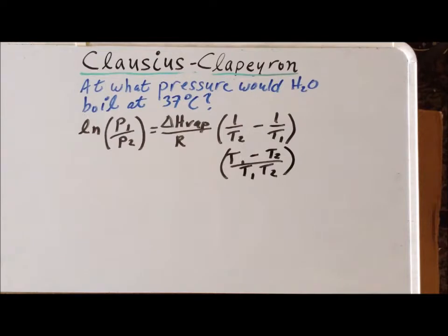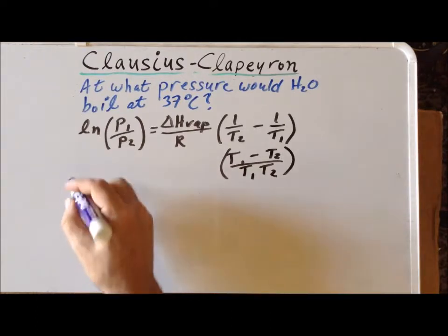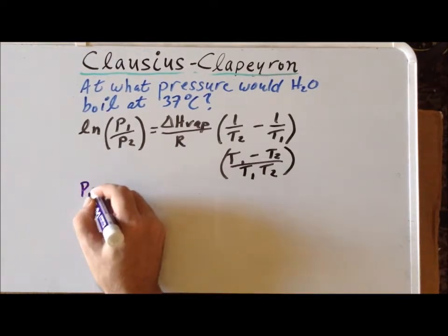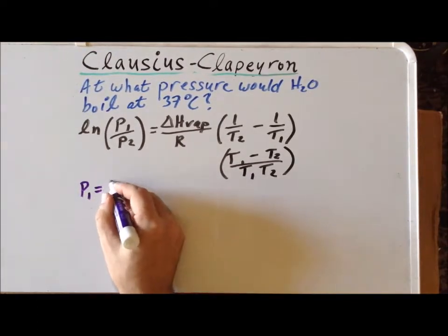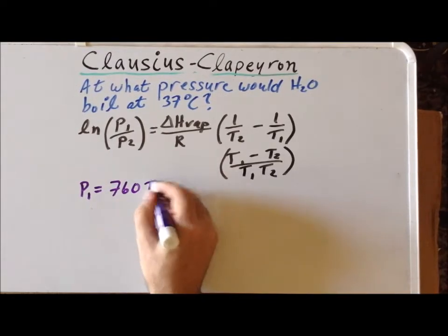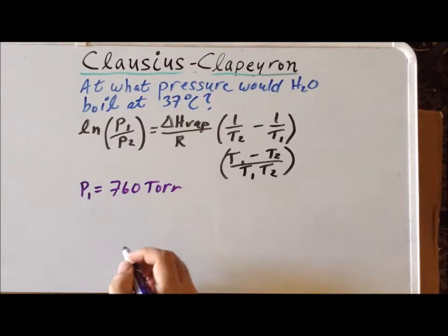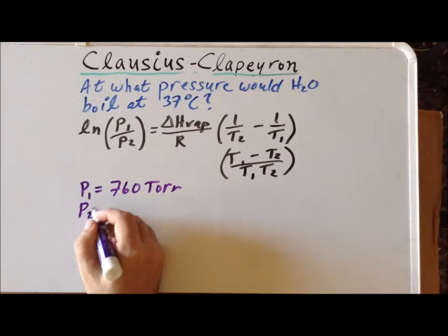So in this particular problem, what are the specific numbers that we need to use? We have that P1 is 1 atmosphere, 760 torr. P2 in this problem is to be determined.